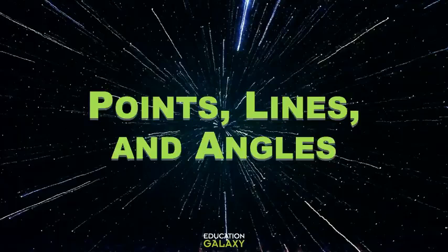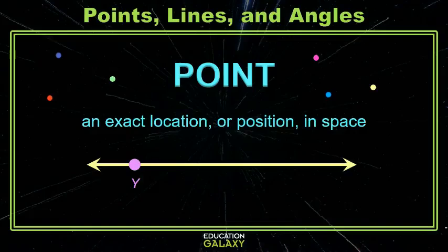Points and lines and angles, oh my! First up on our agenda is a point. A point is just a place in space. Typically we see this marked with a dot, so we know where it is on our paper. And often it's just marked with a letter. In this image we see point Y.